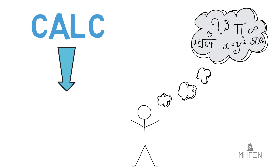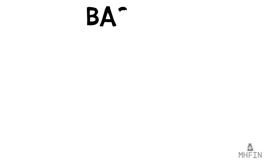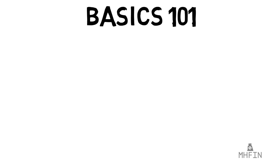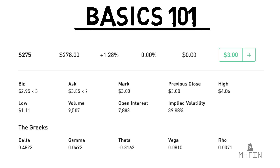Think of it as taking an algebra-based physics class instead of a calc-based one. In its most simple form, IV is determined by the current price of options contracts on a specific stock or future. It is represented as a percentage that you can find under the options detail page on Robinhood.